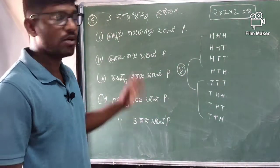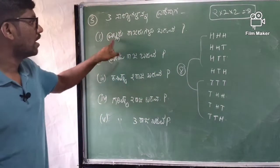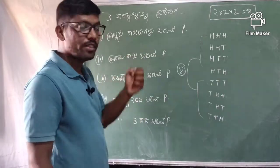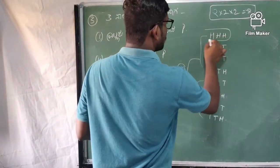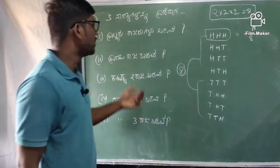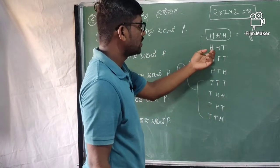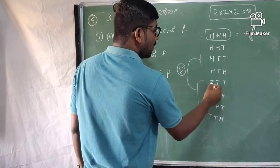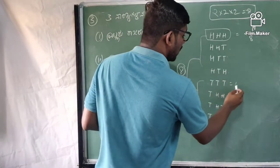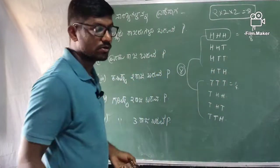The total outcomes are fixed. The first question is: if you are able to get all heads, the probability is 1 by 8. The answer is 1. If you have to consider all tails, you can see all tails — that is TTT — 3 tails. The probability of all tails is equal to 1 by 8. Hence the first question: we have to consider 1 by 8.